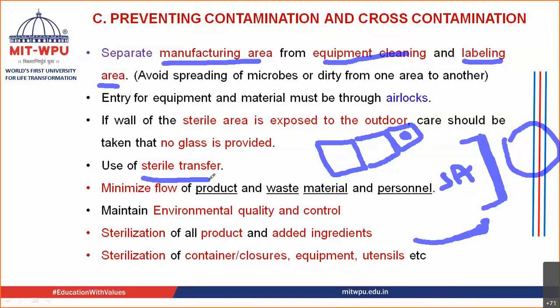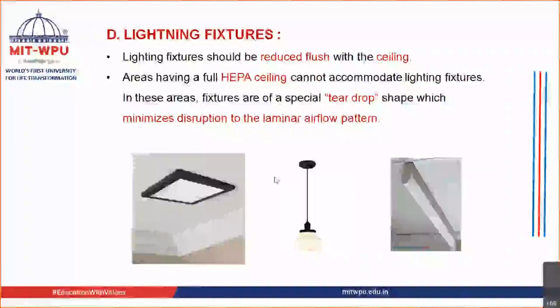There should be minimal continuous flow of product, waste material, and personnel, as continuous flow leads to cross-contamination — waste material and people moving from one area to another can carry contaminants. Environmental quality must be maintained and controlled — air, temperature, and humidity should always be monitored to prevent cross-contamination. Sterilization of all products, ingredients, containers, closures, equipment, and utensils must also be carried out.